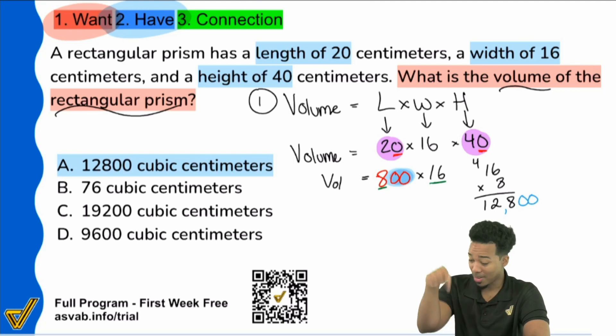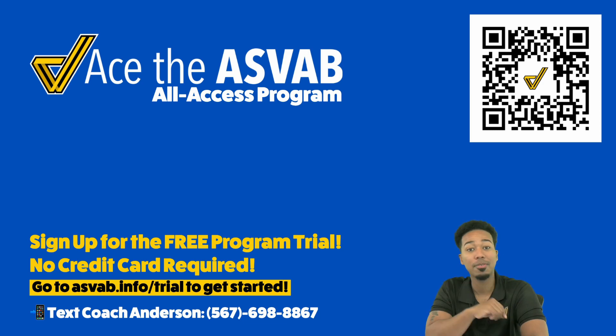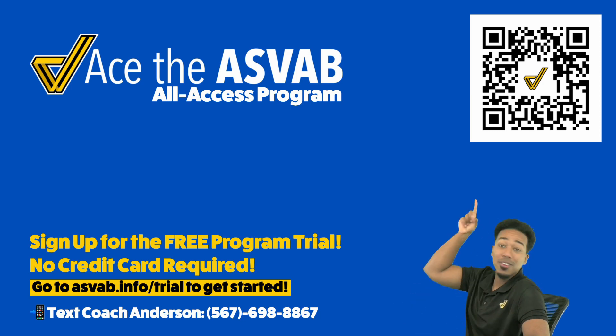So if you liked that, go ahead, comment below. Let me know if this helped you out even in the least. And then on top of that, make sure you remember that we have our program, our full program, free for a full week. All you have to do is go to the QR code up there, go to that link over there, and then shoot me a text at 567-698-8867. Once you're done getting set up, introduce yourself and let's ace the ASVAB.